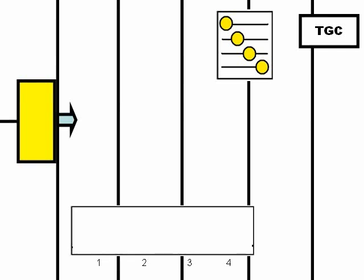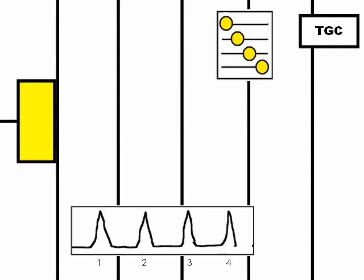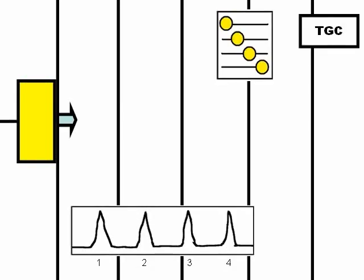This is why we use time gain compensation: less amplification for echoes from superficial areas and more amplification for echoes from deeper structures. The first echo receives less amplification, the second echo receives more amplification, resulting in the same amplitude across all four echoes — because echoes from deeper structures receive more amplification. Without TGC there is no compensation; with TGC there is compensation.